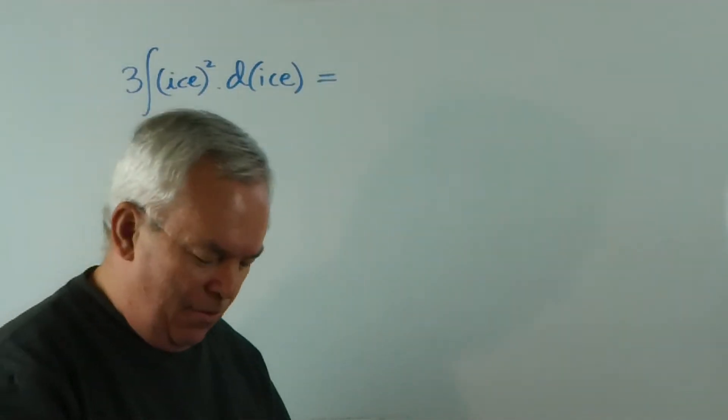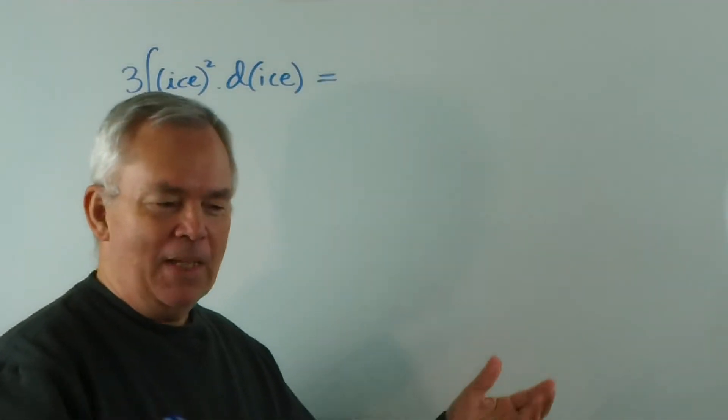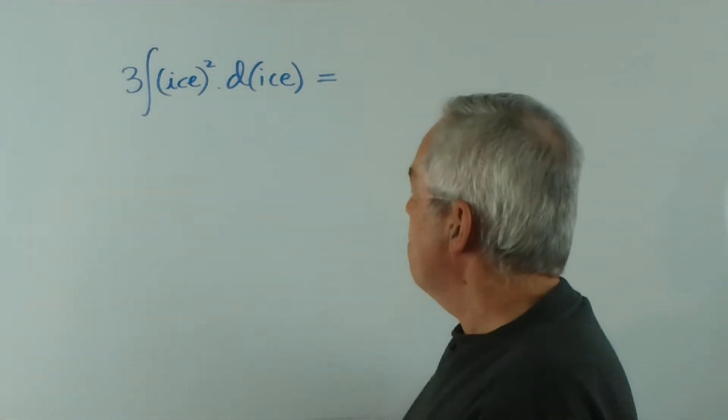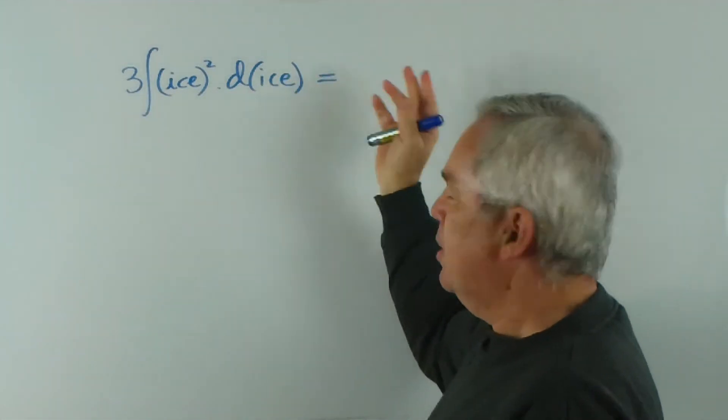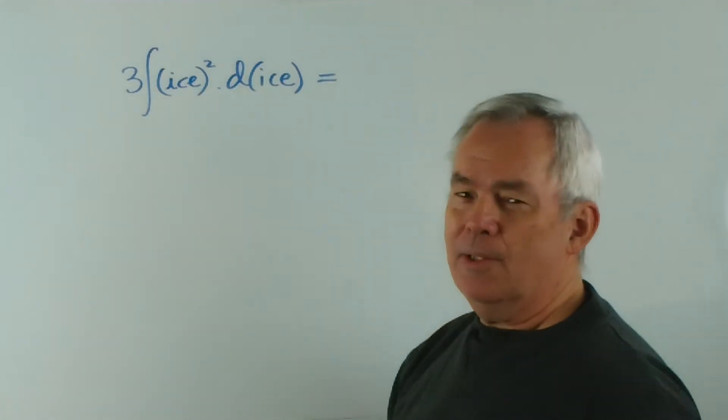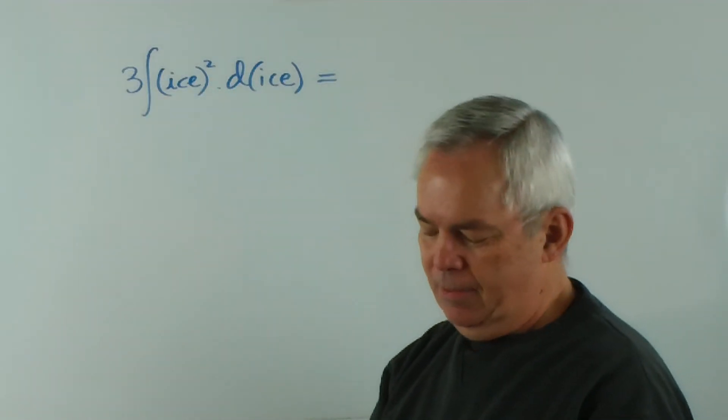Now, well, you may ask, why do we have a variable called ice? My response is you can have a variable of anything you wish. You can have three donkey squared ddonkey, if you wish, or three x squared dx.